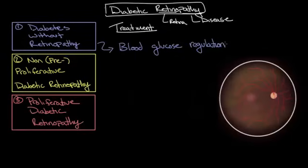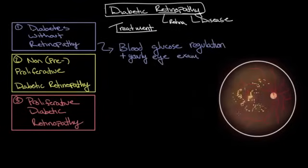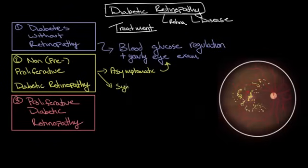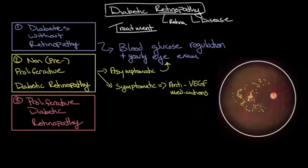Because these early stages are often asymptomatic, it's important for all individuals with diabetes to have a yearly dilated eye exam performed by an ophthalmologist to look for signs of diabetic retinopathy. Once an individual has signs of diabetic retinopathy such as the microhemorrhages, microaneurysms, and hard exudates, and they move into the second stage, treatment is dependent on symptoms. If that individual is asymptomatic, their only treatment is to maintain proper blood glucose regulation and the yearly eye exam. However, as soon as symptoms such as blurry vision or floaters develop, they should be placed on anti-VEGF medications, which prevent the proliferation of new blood vessels in the retina and help prevent progression to proliferative diabetic retinopathy.